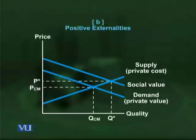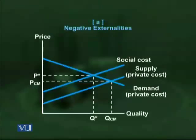In order to explain these two types of externalities, let's look at the diagrams on screen. In the absence of externalities, the supply curve and demand curve intersect at a point where output is QCM (competitive market quantity) and price is PCM. As far as a competitive market is compared to monopoly, it is a socially efficient market. But due to externalities, a perfectly competitive market can also become a reason for market failure.